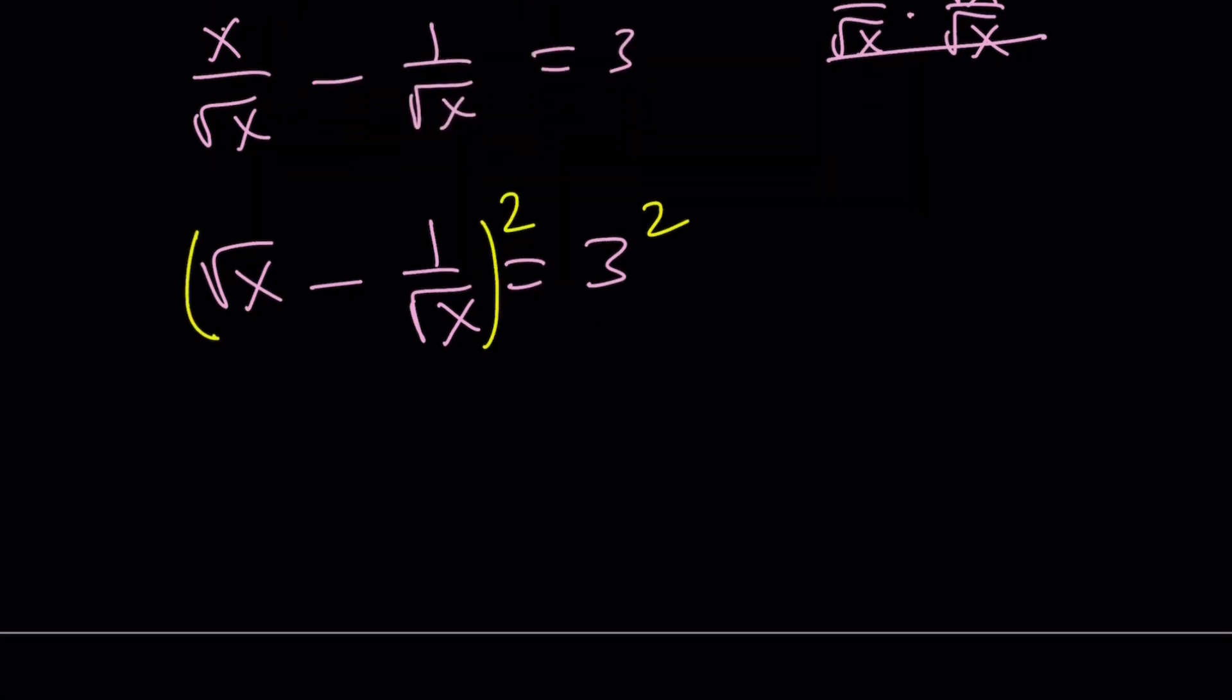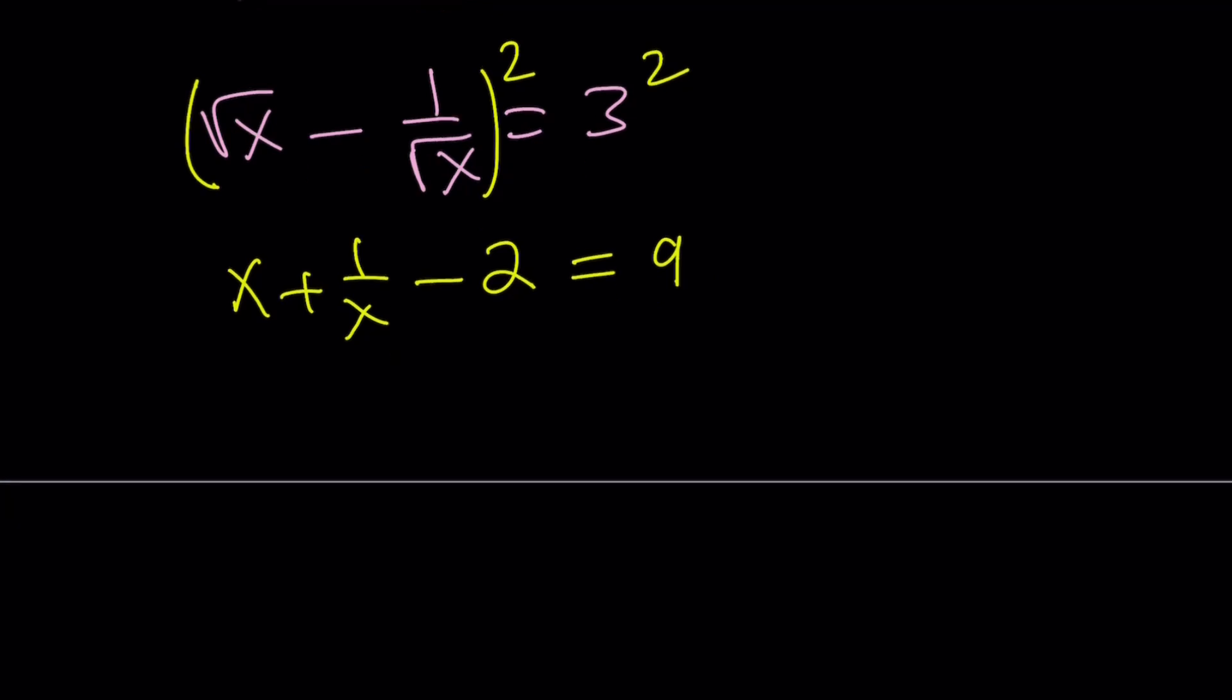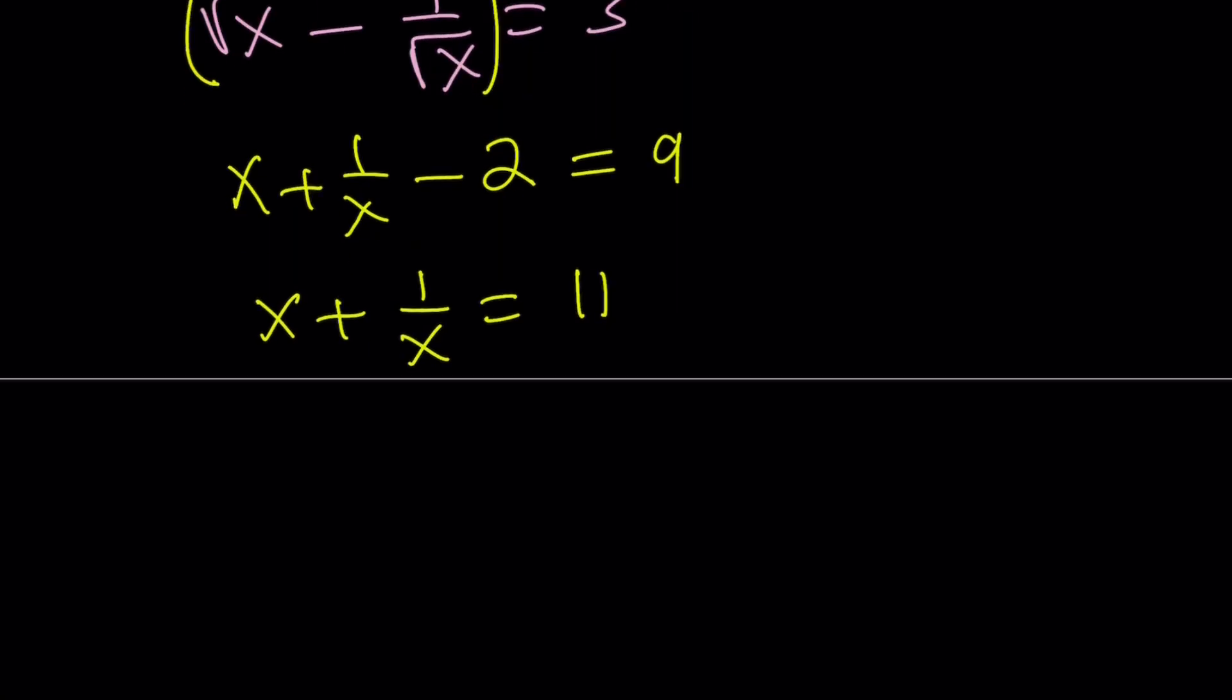If I square both sides, I'm going to get something nice. a squared plus b squared minus 2ab. The good thing about these kinds of expressions is 2ab, the square root of x cancels out, so we just end up with a minus 2, which is really cool. And that is 9. Add 2 to both sides, you get x plus 1 over x, which is cool, but I do need x squared plus 1 over x squared, so let's go ahead and square one more time.